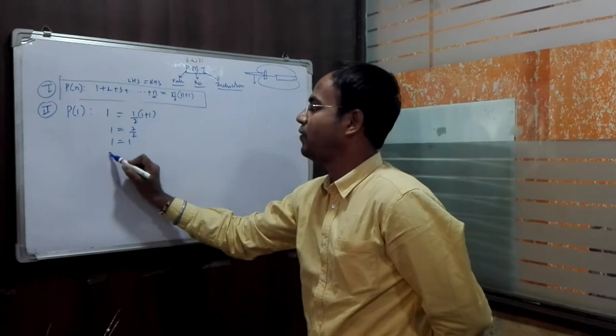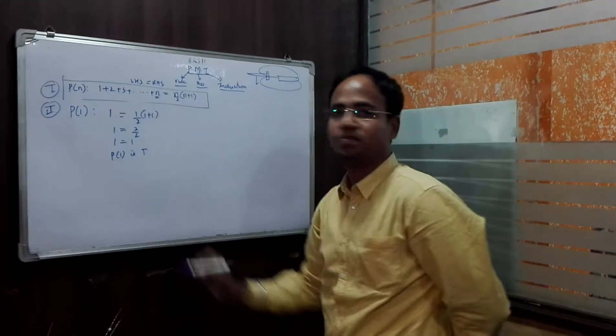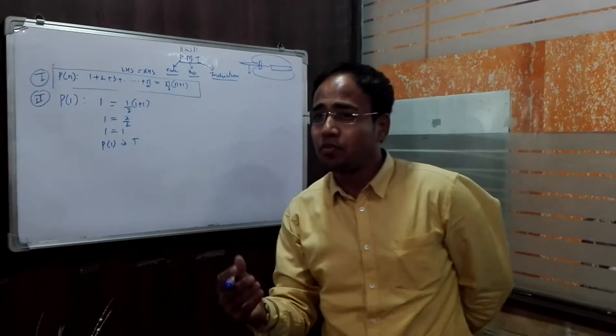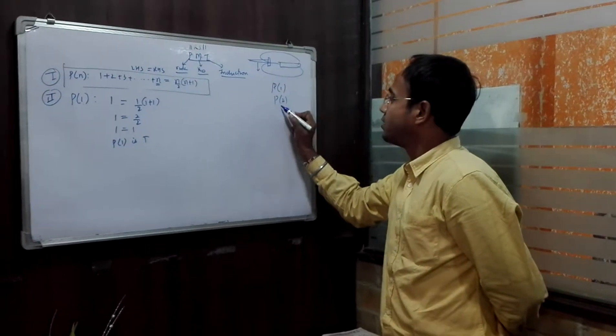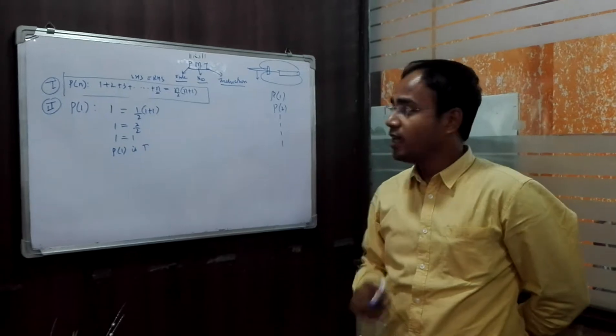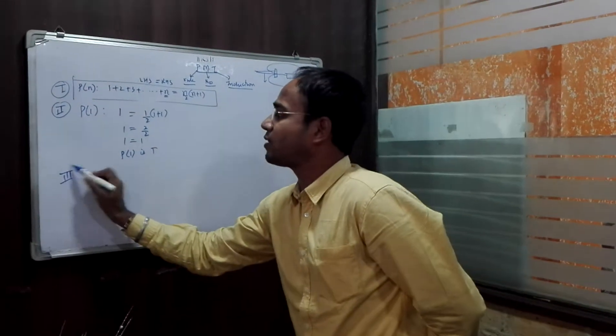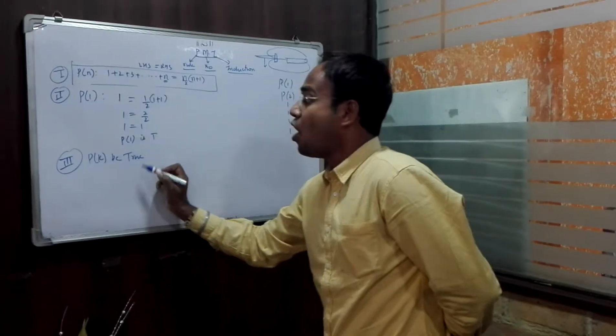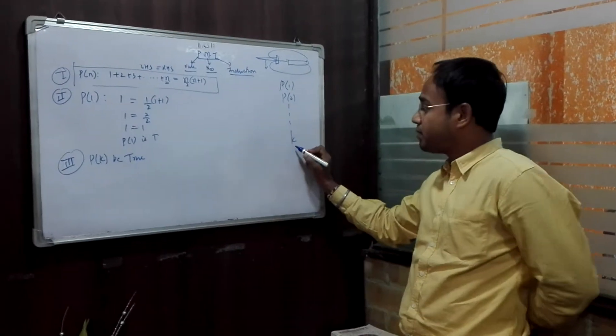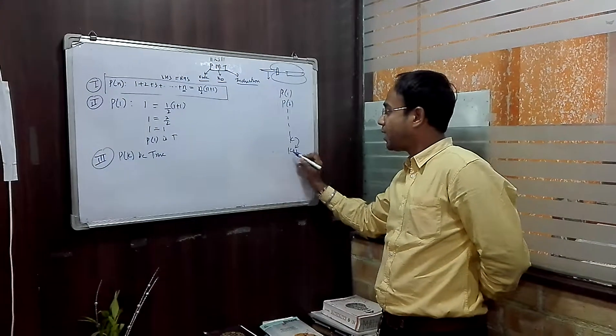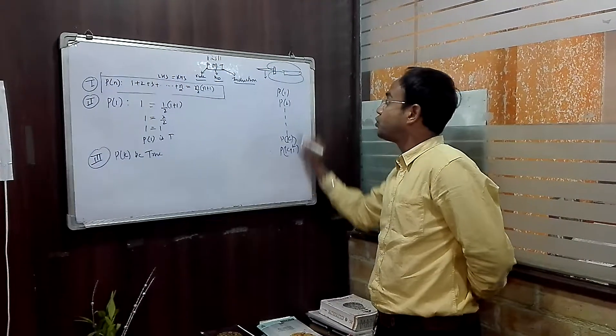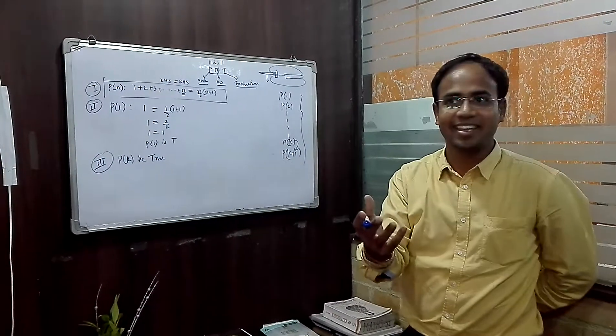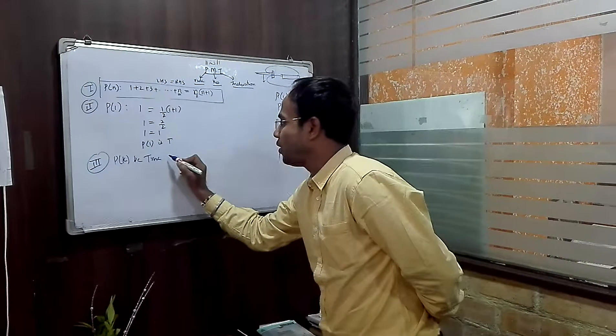Hence P(1) is what? Yes guys, true. Now you can make P(2) proof and P(1) proof and P(12) proof, but we are not allowed to prove two separate statements. Life won't allow you proof. So third step, therefore, let P(K) be true.